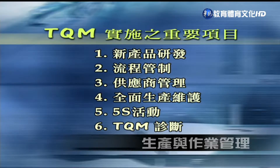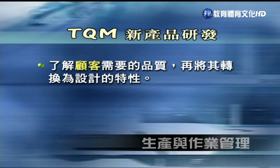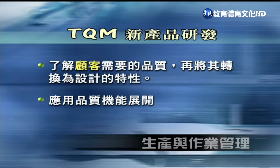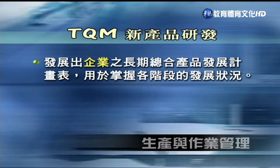首先看新产品的研发，主要是了解顾客需要的品质，再把需求品质转换成设计要点。应用的方法通常是QFD品质机能展开，可以发展出企业长期综合的产品发展计划表，掌握各个产品生命周期阶段的发展状况，借由持续不断的新产品研发，强化企业的应变能力与竞争力。